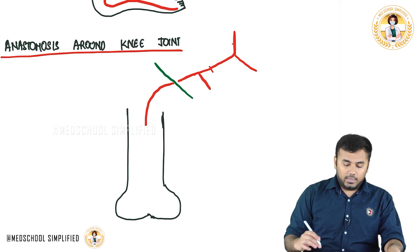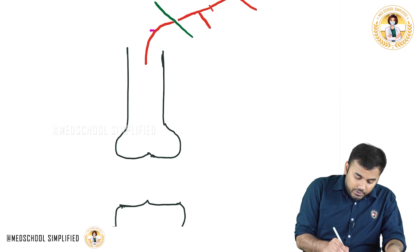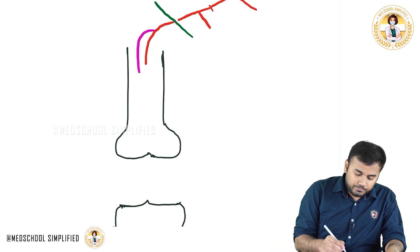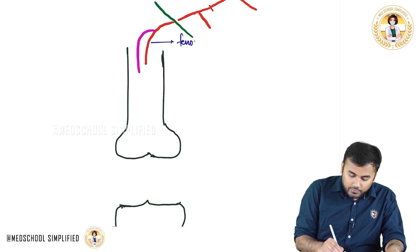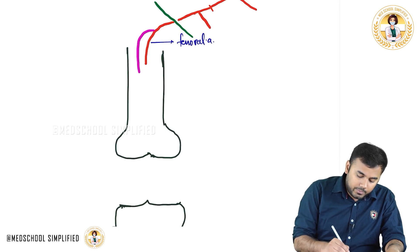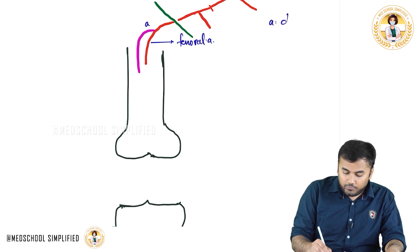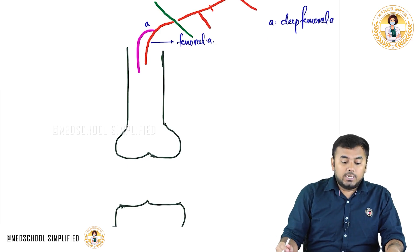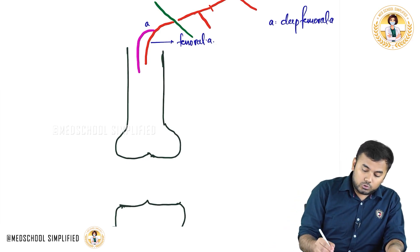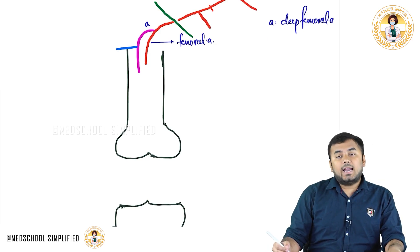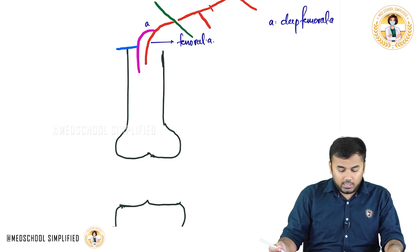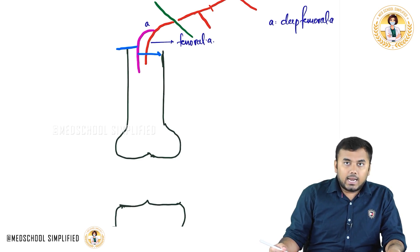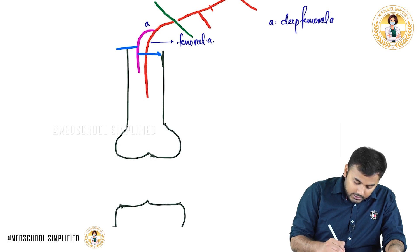Through this femoral artery, you see a short branch coming down — this artery is called the deep femoral artery, labeled A. This deep femoral artery has two important branches: one going laterally called the lateral circumflex femoral artery, and another going medially called the medial circumflex femoral artery. And this is the femoral artery continuing down.